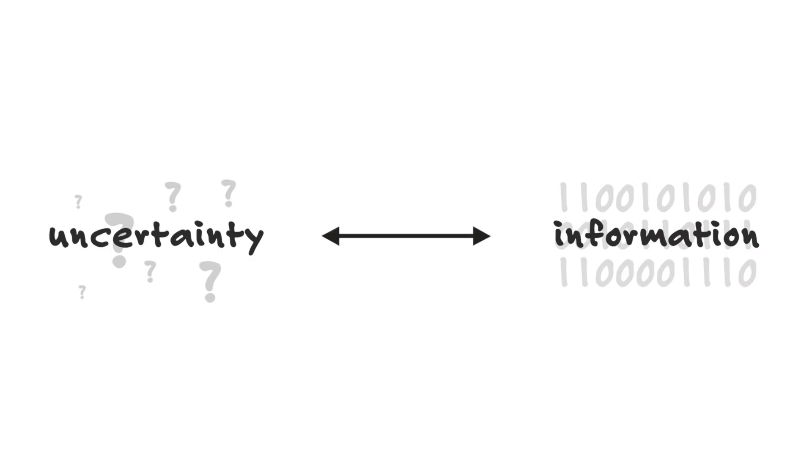If I tell you, however, the outcome of a closely contested baseball or football game that you didn't have the chance to watch, I have reduced a lot of uncertainty, and therefore I've given you an informative statement. This was Shannon's basic intuition: information is related to the reduction in uncertainty.